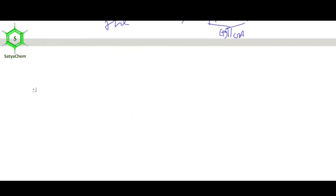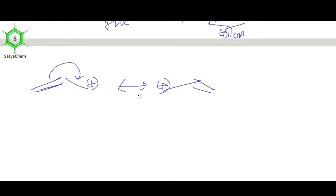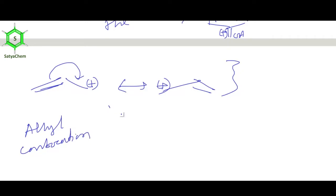Allyl carbocation is stabilized by resonance effect — positive charge gets dispersed over the system. Allyl carbocation is more stable than tertiary carbocation. Benzyl carbocation is another important one; it is more stable than allyl carbocation. Simply count the number of resonance structures — allyl carbocation has fewer resonance structures, while benzyl carbocation has 5 resonance structures, making it more stable.